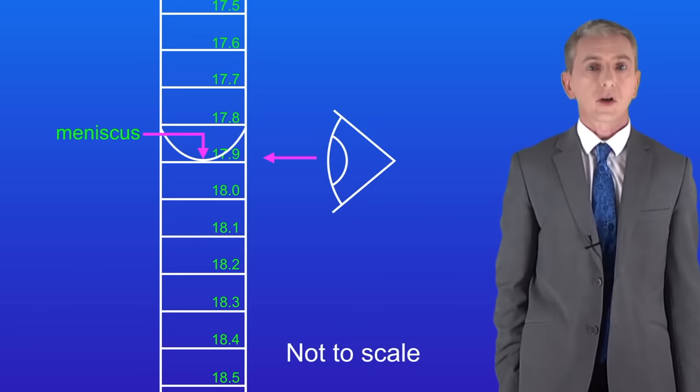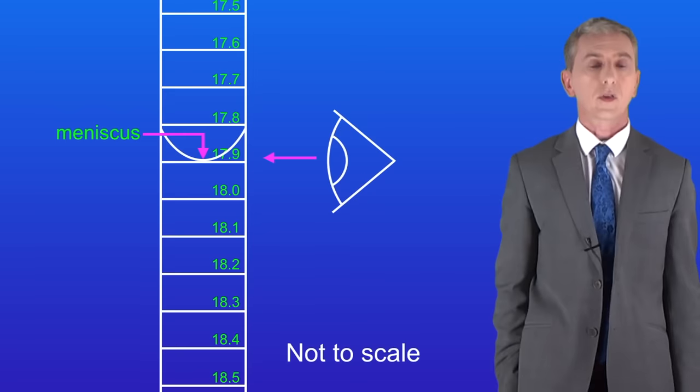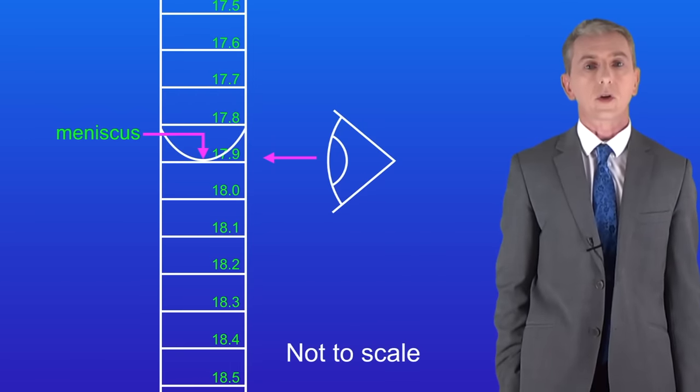Normally when carrying out a titration such as this we repeat the titration several times until we get two readings within 0.1 centimeters cubed. We then take a mean of these for our final volume.